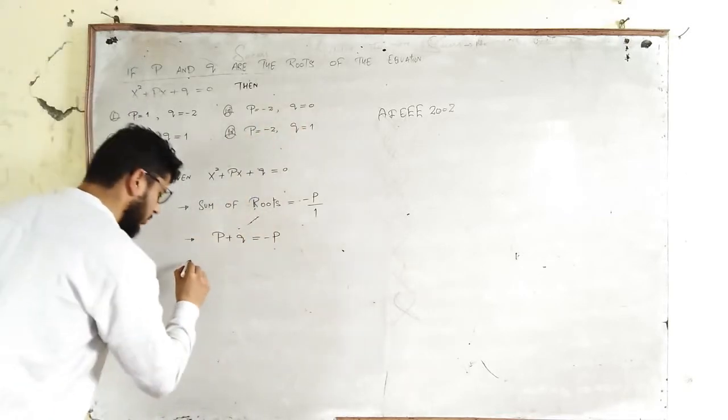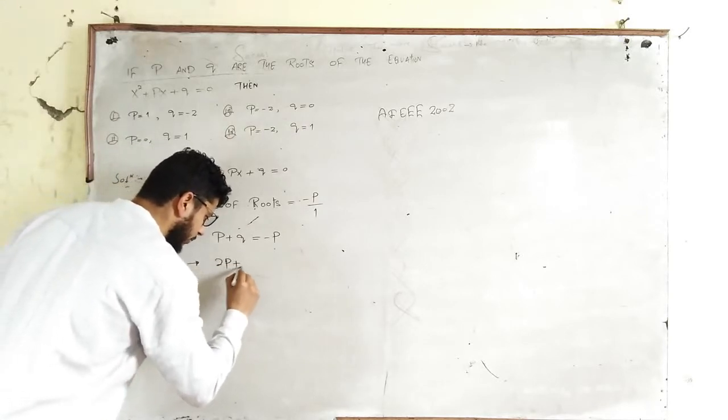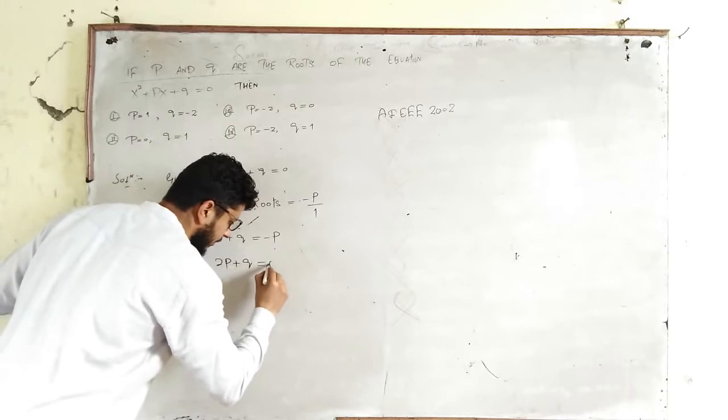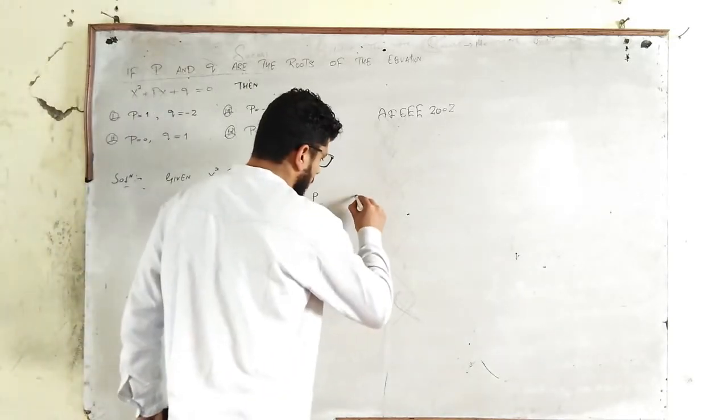So we will add P and Q. From this we will get 2P + Q = 0. Also, you can write: